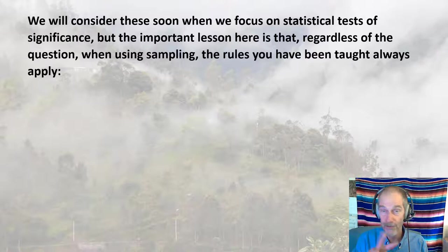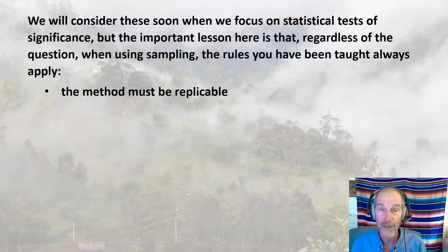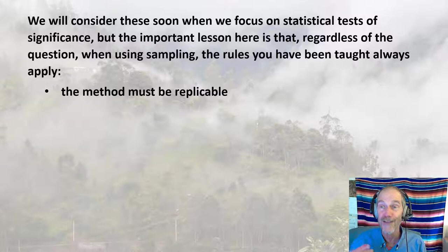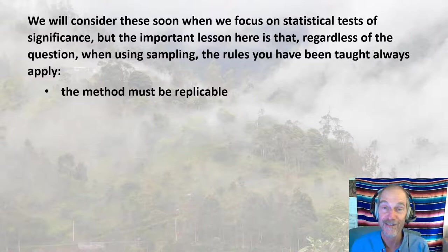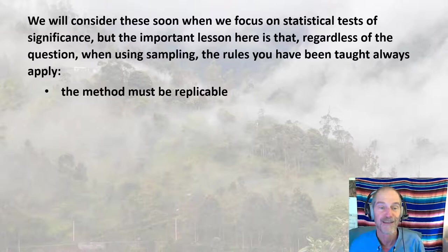We'll consider comparing two populations soon when we focus on statistical tests of significance, but I'm not getting into that here. The important lesson is that regardless of the question, when using sampling, the rules you've already been taught always apply. Those rules are: first, the method must be replicable. That doesn't mean you do it twice — it means you've described it so well that it could be replicated. They discovered a gravity wave using a very complicated instrument; they didn't do it twice, but they couldn't publish unless they convinced everyone it could be done again following their procedures.